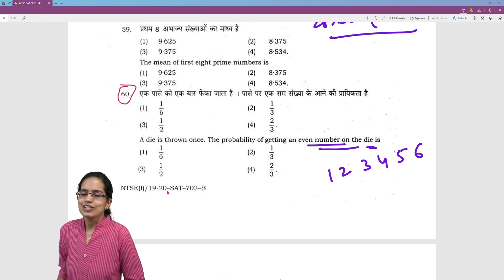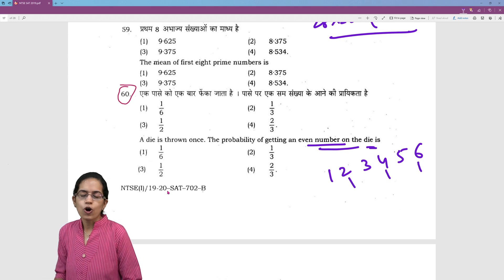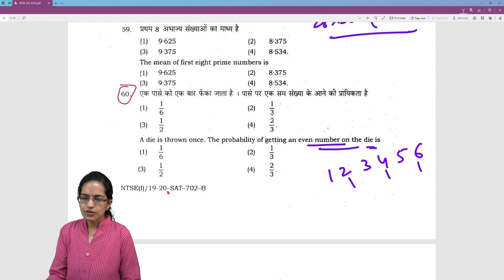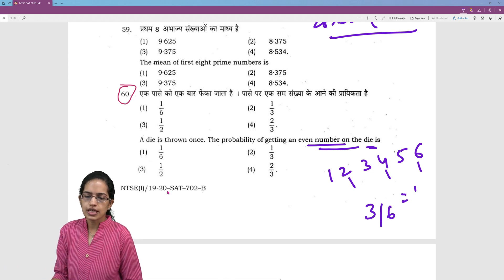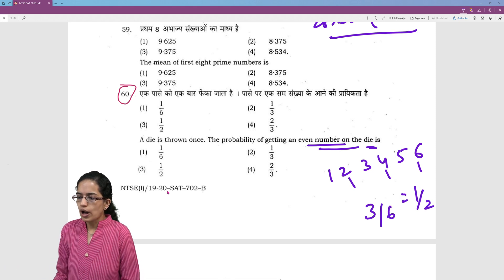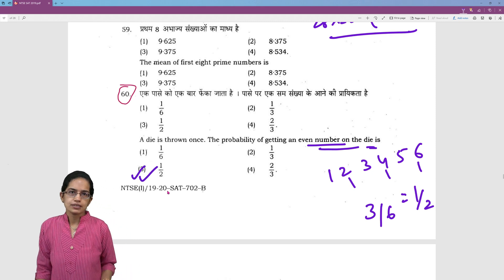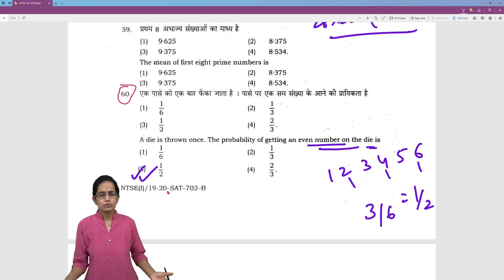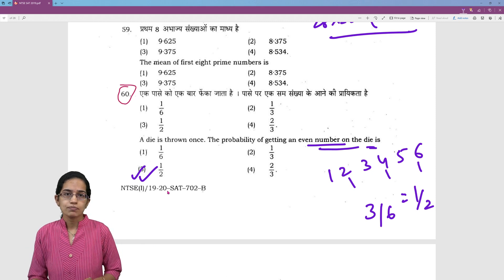So even sides are 3, odd sides are 3. So probability of getting an even number is 3 out of 6. That is 1 out of 2. So 1 out of 2 or 50% probability becomes the right option. Very simple and very logical questions on mathematics.